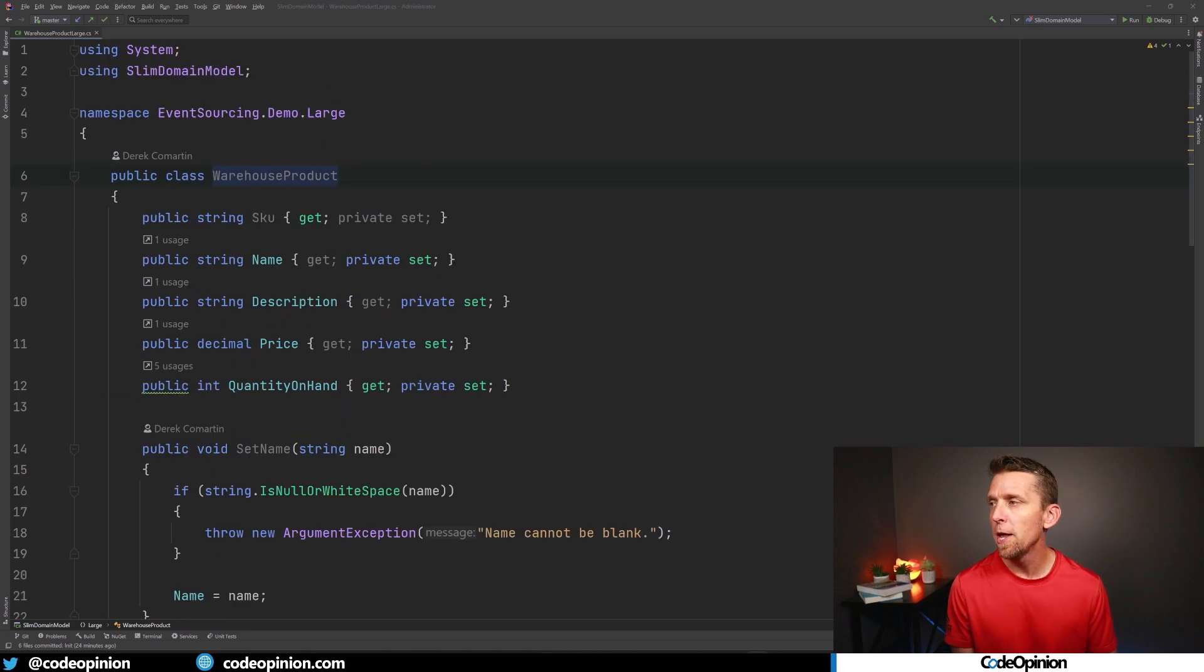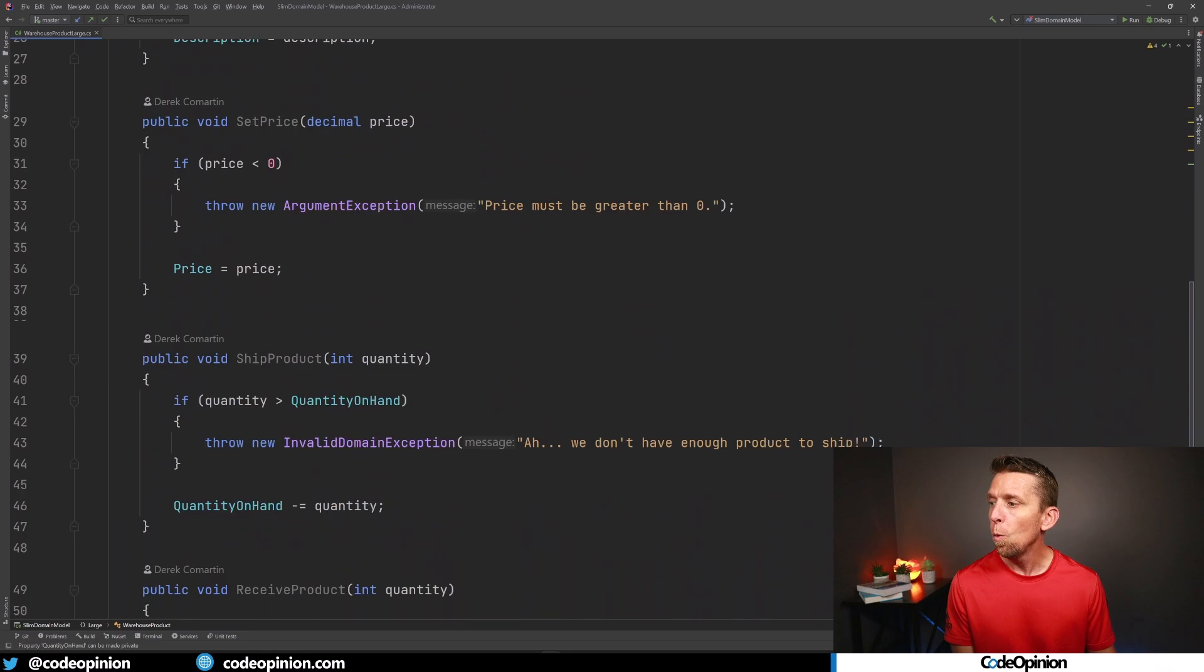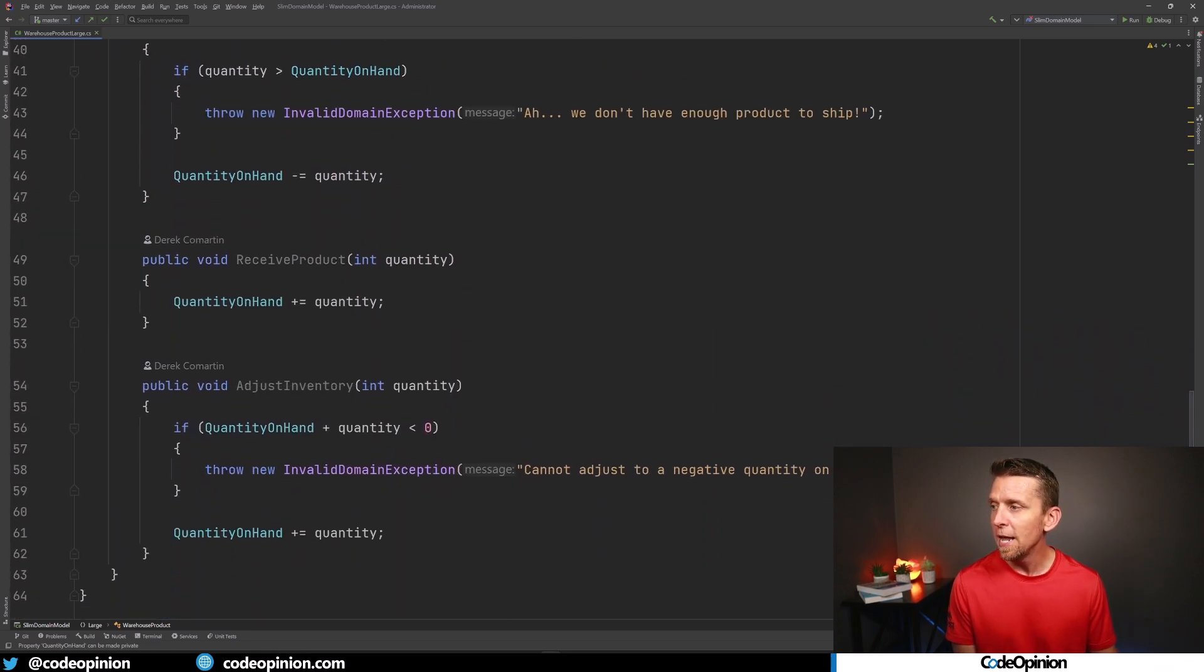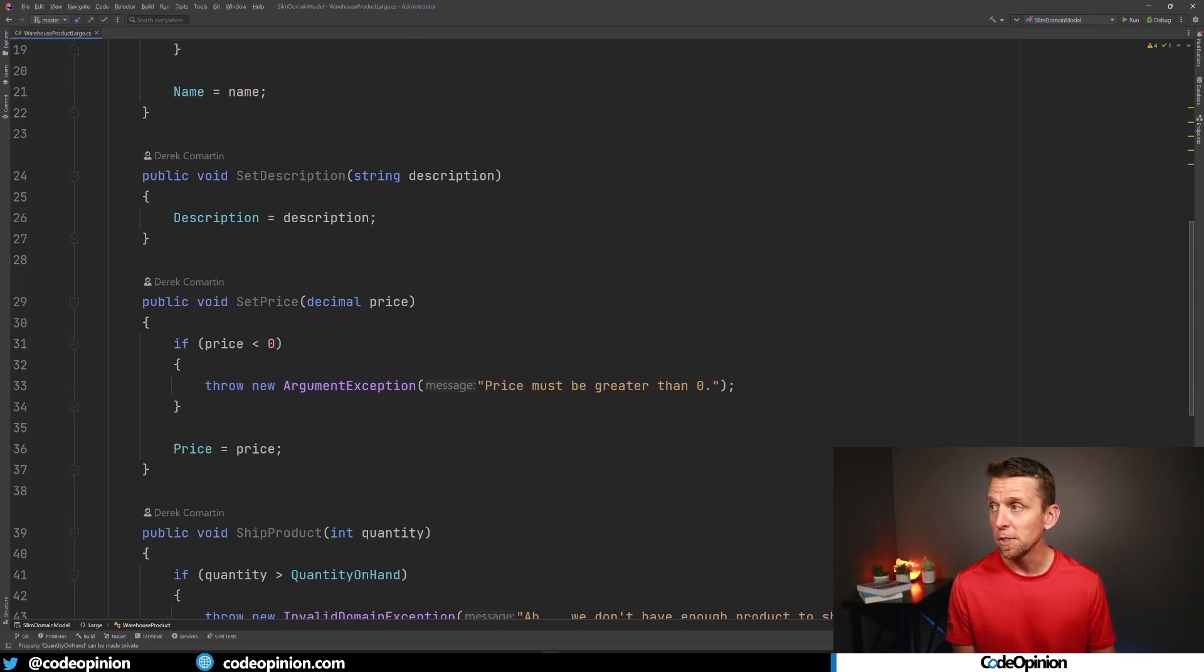Now the thing to point out because we're using an ORM, this is the data that we're actually mapping to our underlying database. So we have all these properties. Again, real world, there could be a lot more. But of all these in my example, which ones are actually relevant for this model? Just actually the quantity on hand, because we use it when we ship product, we have some validation here, we have some logic. And when we do an inventory adjustment, we're making sure that we have a positive quantity on hand.